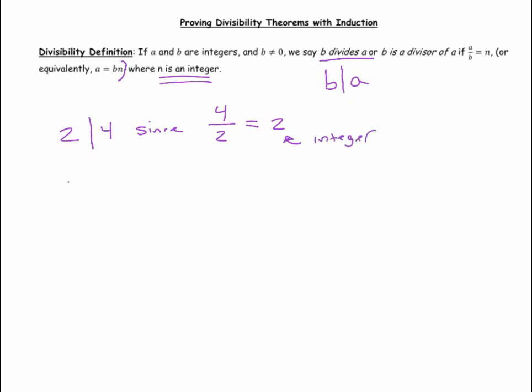On the other hand, 3 does not divide—so I'll put a little line there—3 does not divide 4, since 4 over 3 does not equal an integer.